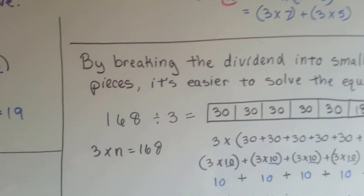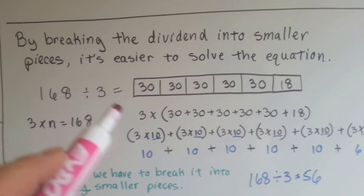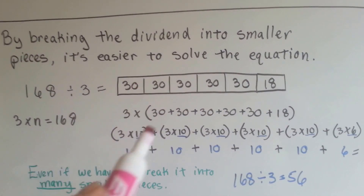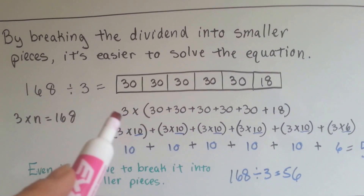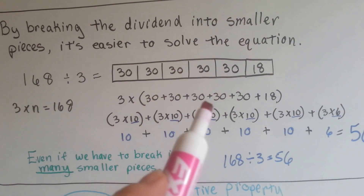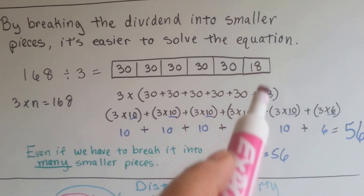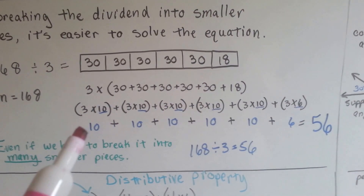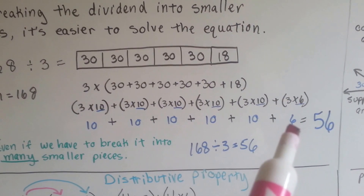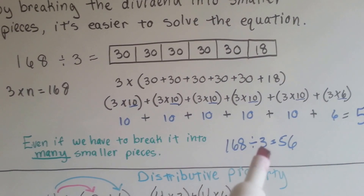By breaking the dividend into smaller pieces, it's easier to solve the equation. For 168 divided by 3, I can break it into 30, 30, 30, 30, 30, and 18. That's a lot of small pieces, but I know my 10 times table very quickly, so that's why I used it. So I know I've got 3 times 10, five times, and there was 18 left over to get to 168. And I know that 3 times 6 is 18. So now I pull all those 10s — that's five of them, which is 50 — and I pull the 6, add it to the 50, and I've got 56. So 168 divided by 3 is 56.